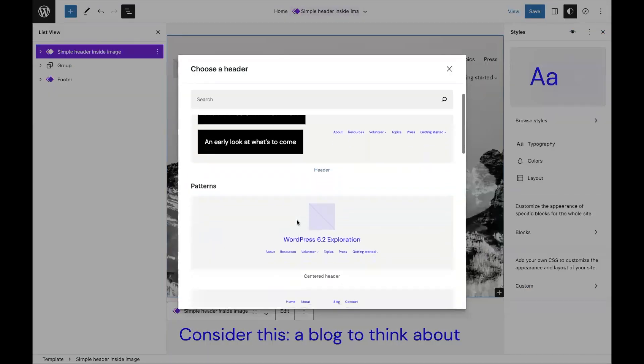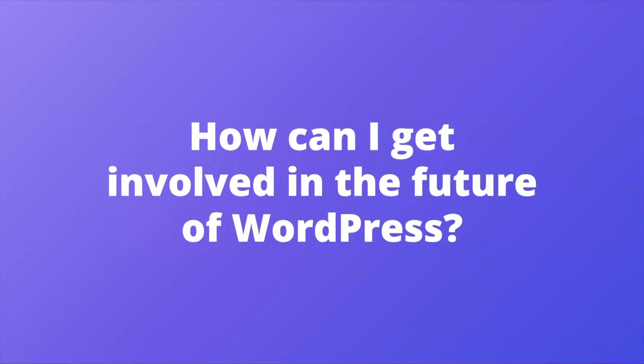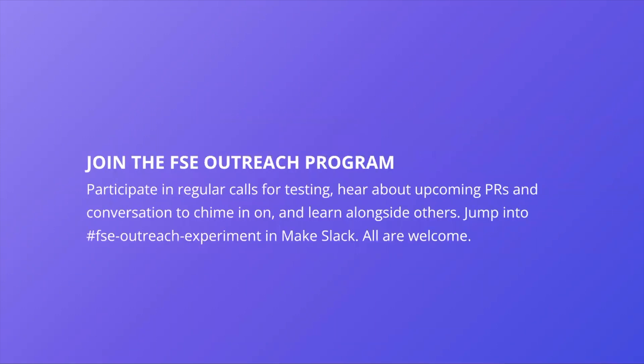There are also quick pattern switches so you can replace what's being used on your site with ease. Now that you've seen a glimpse of the future with what's being done for 6.2, you might be asking: how can I get involved in the future of WordPress? Join the FSE outreach program. There's currently a call for testing a lot of these features, and regular opportunities for testing, hearing about upcoming PRs, and joining conversations featured on this channel and in hallway hangout videos. All are welcome.